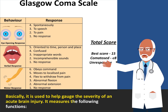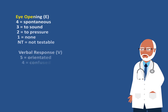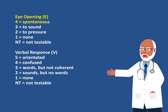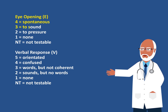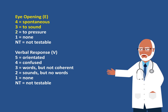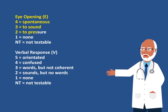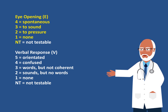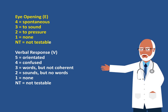The Glasgow Coma Scale measures the following functions. Eye opening: if the person opens the eye spontaneously, that's four points. If the person opens the eye to sound, that's three points. If the person opens the eye to pressure, that's two points. And if the person cannot open their eye, that's one point. The non-testable category applies if the person is unresponsive.